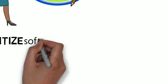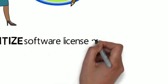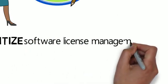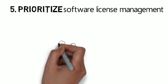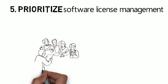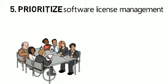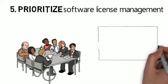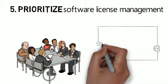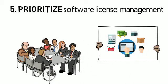5. Prioritize software license management as a critical part of your business. Inform all employees of the process in place, even if it is not part of their department. Keeping everyone in the know on the proper procedures will ensure that license management is part of your overall business agenda.